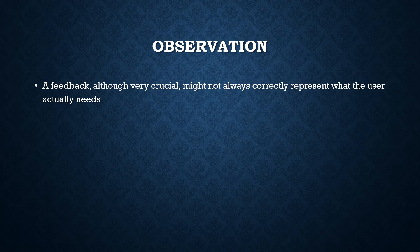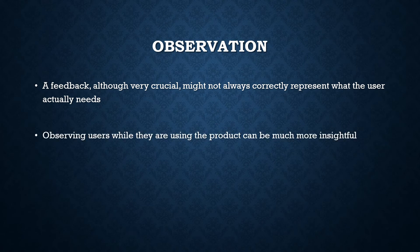The next point is observation. Feedback from a questionnaire is definitely very crucial, but it might not always correctly represent what the user actually needs. Not every user, not every stakeholder, not every customer can put his or her requirements or feedback into words that your project team can understand. That is where observation steps in — all you do is observe users while they are using the product. That is definitely going to be much more insightful. You can actually host an event where you call up all your users, give them the infrastructure, give them the environment, and ask users to make use of your product.